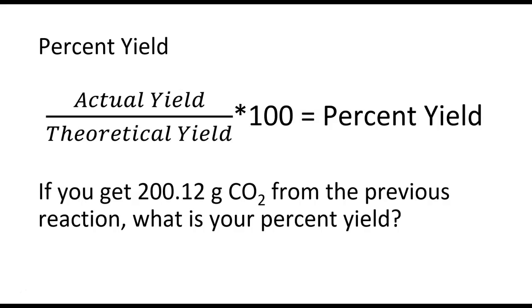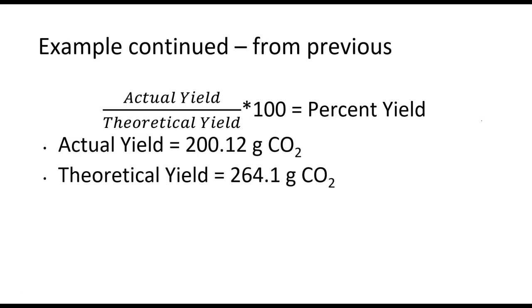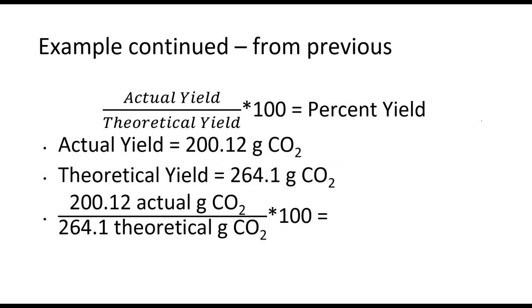So if we get 200.12 grams of CO2 from the previous reaction, we want to know what is our percent yield. We can use this equation to determine our percent yield. Our actual yield, we had the 200.12 grams CO2, and the theoretical yield we calculated before of 264.1. We can plug it into our equation and we can find 75.77% yield.